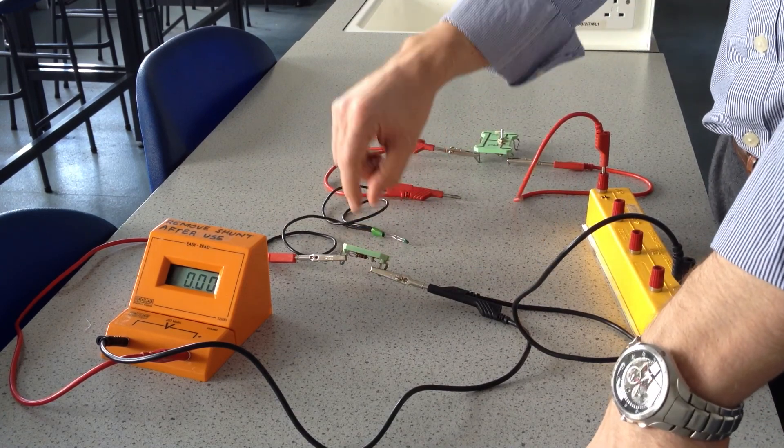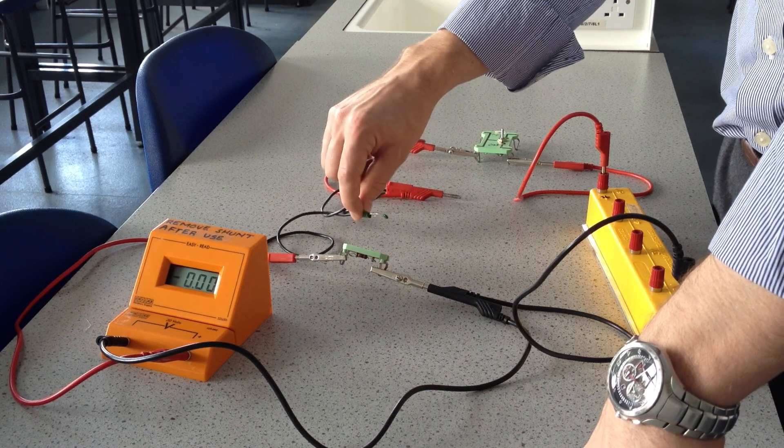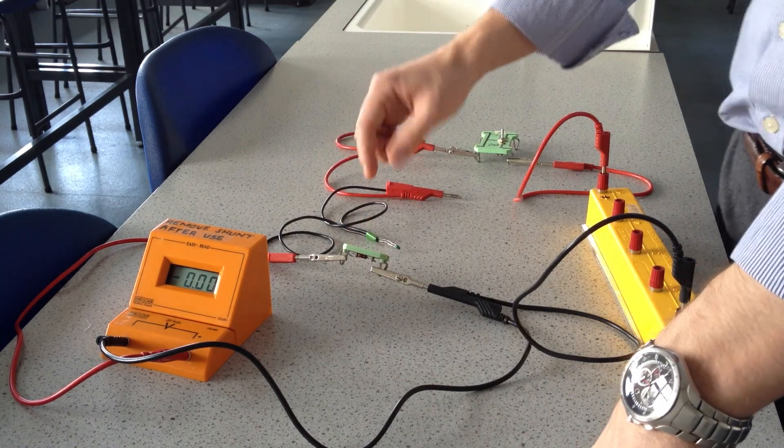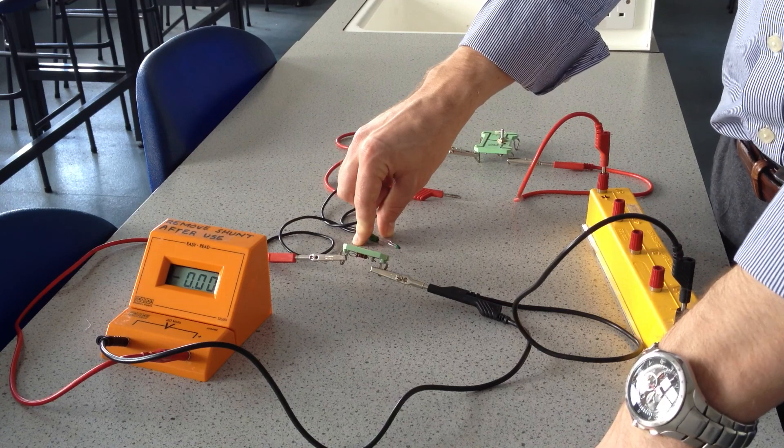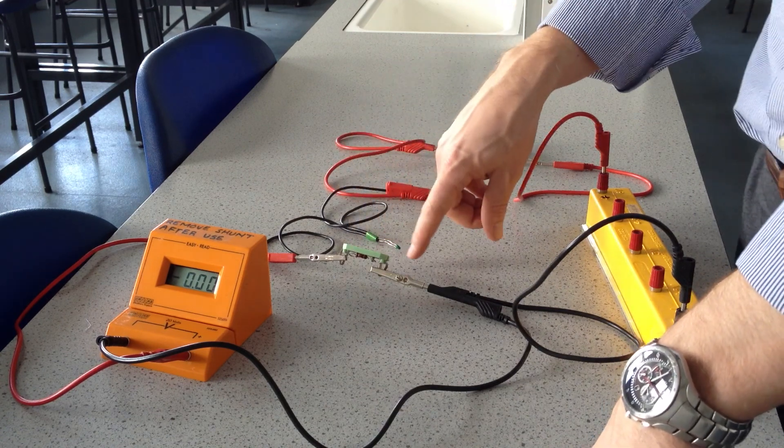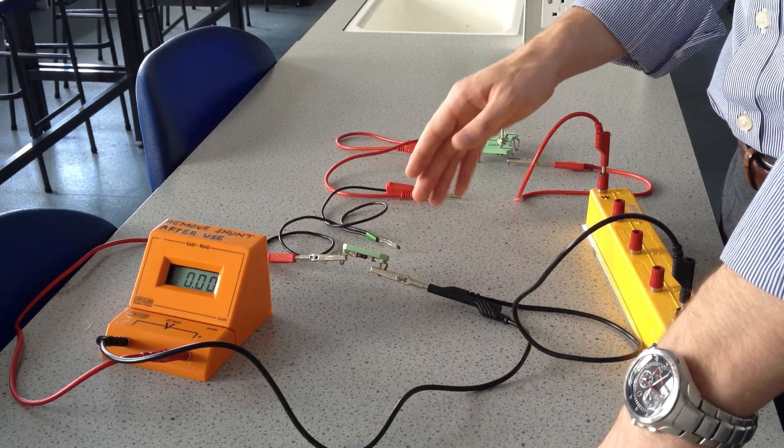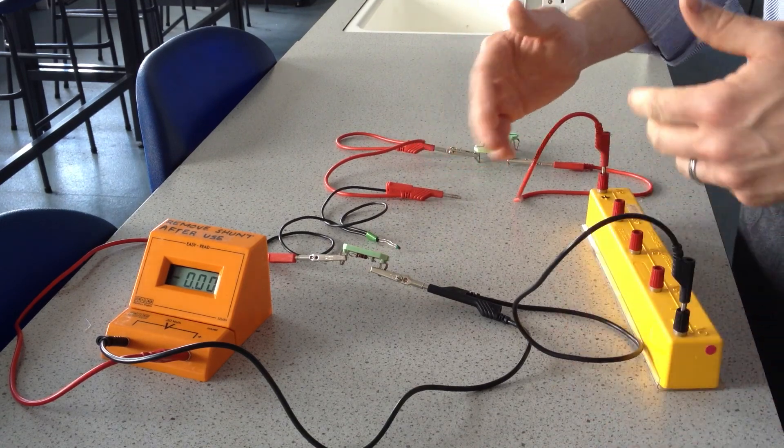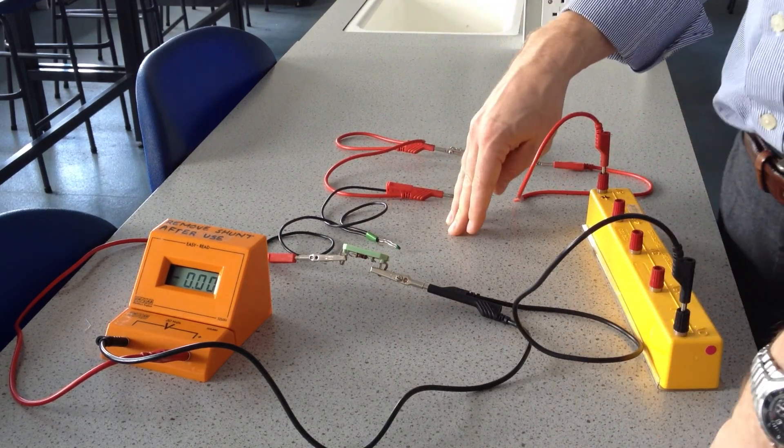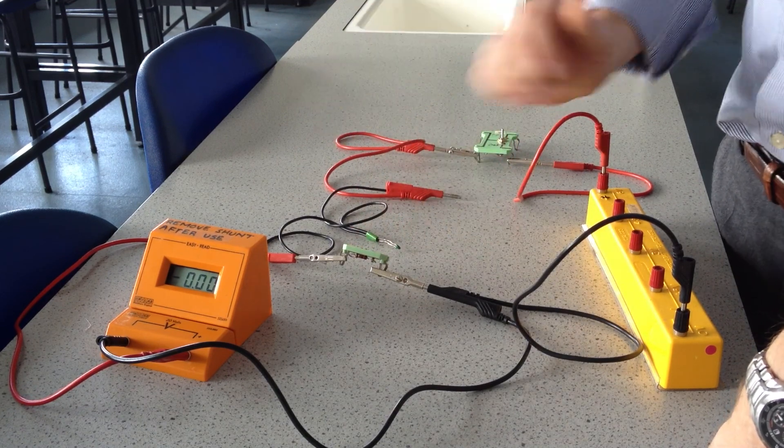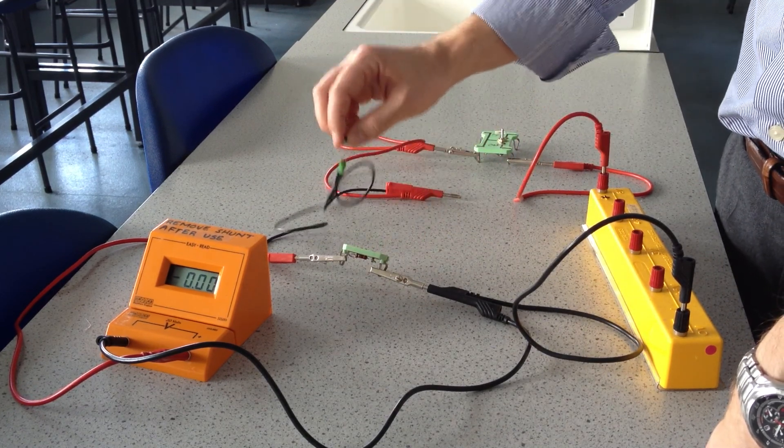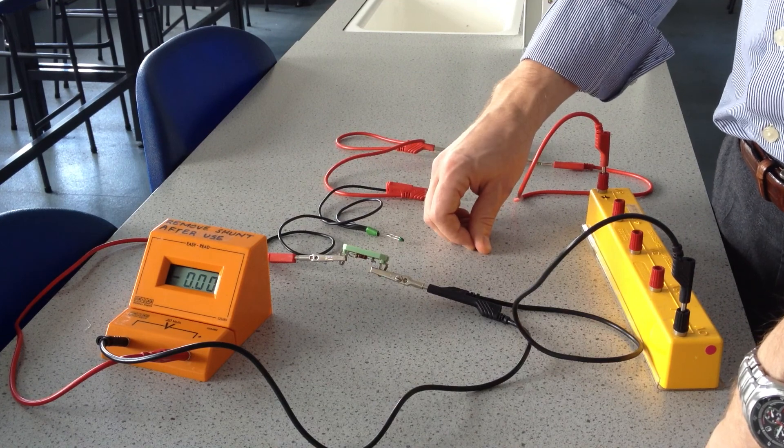When I allowed it to cool down, the temperature of the thermistor was decreasing so its resistance was increasing. And that meant its share of the voltage had to increase also. Again, for the total voltage to remain constant, the voltage across the fixed resistor had to decrease as the voltage across the thermistor increased.